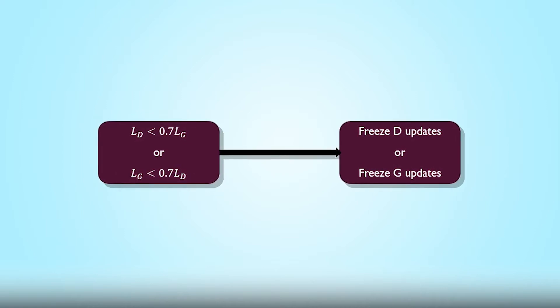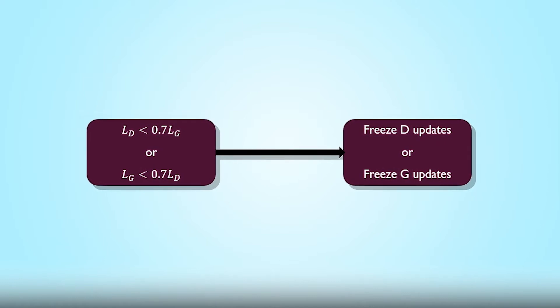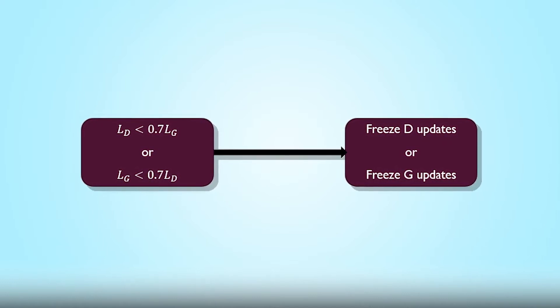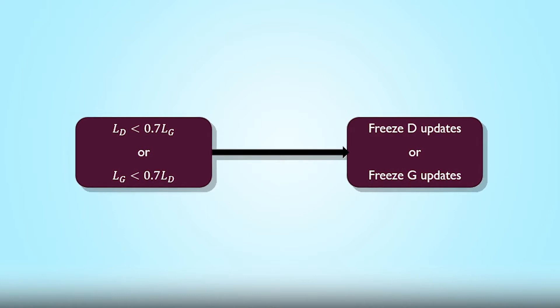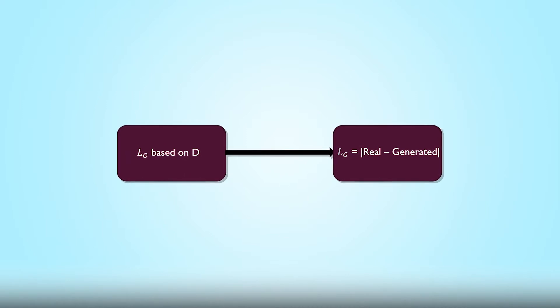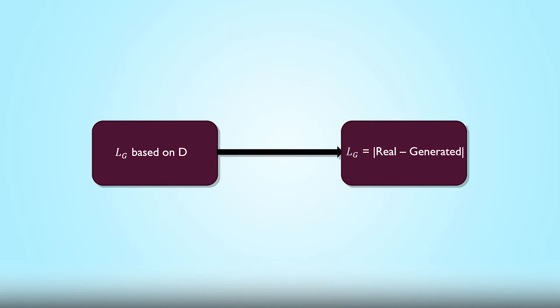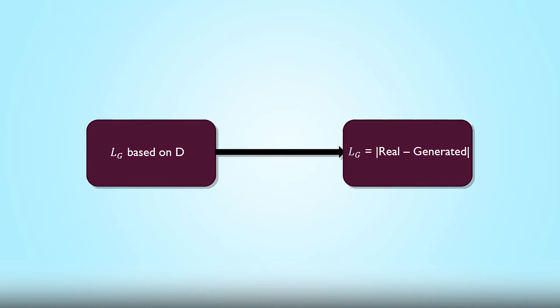Meaning that if D's loss, for example, is less than 70% of G's loss, then we freeze D's update to allow G to catch up and vice versa if G is too strong. We also implement feature matching to prevent the training process from turning into a never-ending cat and mouse game. We do this by changing G's objective from simply trying to beat D to minimizing statistical differences between G's generated music and actual music from our training dataset.